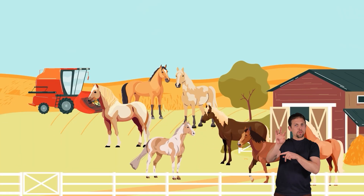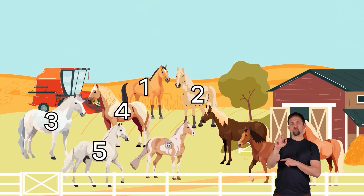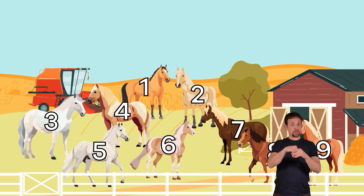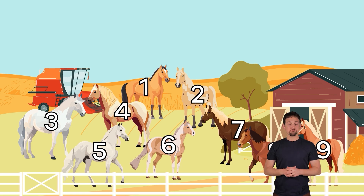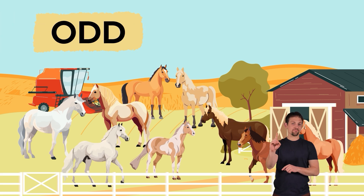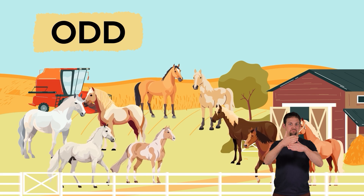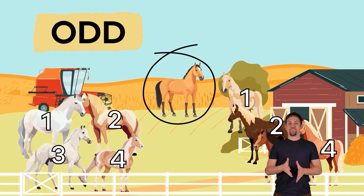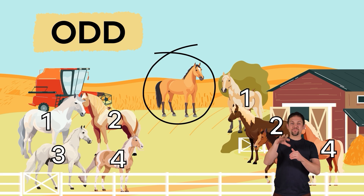What about these 9 horses? Frankie wants to make sure that they have enough space in the barn. She needs to figure out if she can separate them into 2 stalls, or if there will be a horse leftover. What do you think? Is 9 an even or an odd number? Yep, it's odd! Frankie can divide her horses into 2 groups of 4, with one leftover. Looks like she will have to find some more space in the barn.